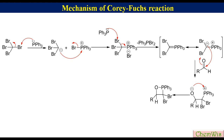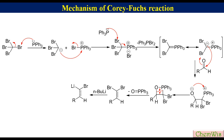Removal of triphenylphosphine oxide from the phosphetane gives the 1,1-dibromoolefin. Metal-halogen exchange reaction of the 1,1-dibromoolefin with n-butyllithium gives a lithiated intermediate, which undergoes alpha-elimination to produce vinylidene carbene. This vinylidene carbene undergoes a 1,2-migration to produce the terminal alkyne.